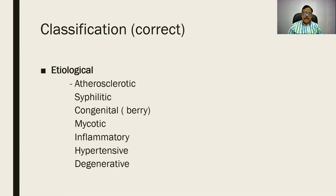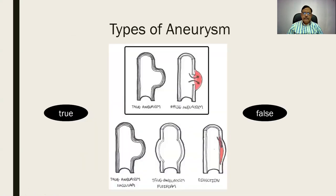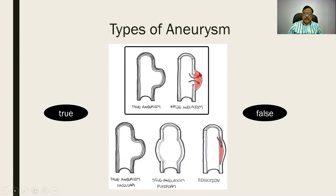These are some important things to remember. The types of aneurysms are shown on the screen in a simplified diagrammatic form. A true aneurysm is one in which the sac-like distension is in communication with the lumen. In a false aneurysm, there is no distension of the lumen, but there is a collection of blood in the perivascular space producing a distension — this is called a false aneurysm.